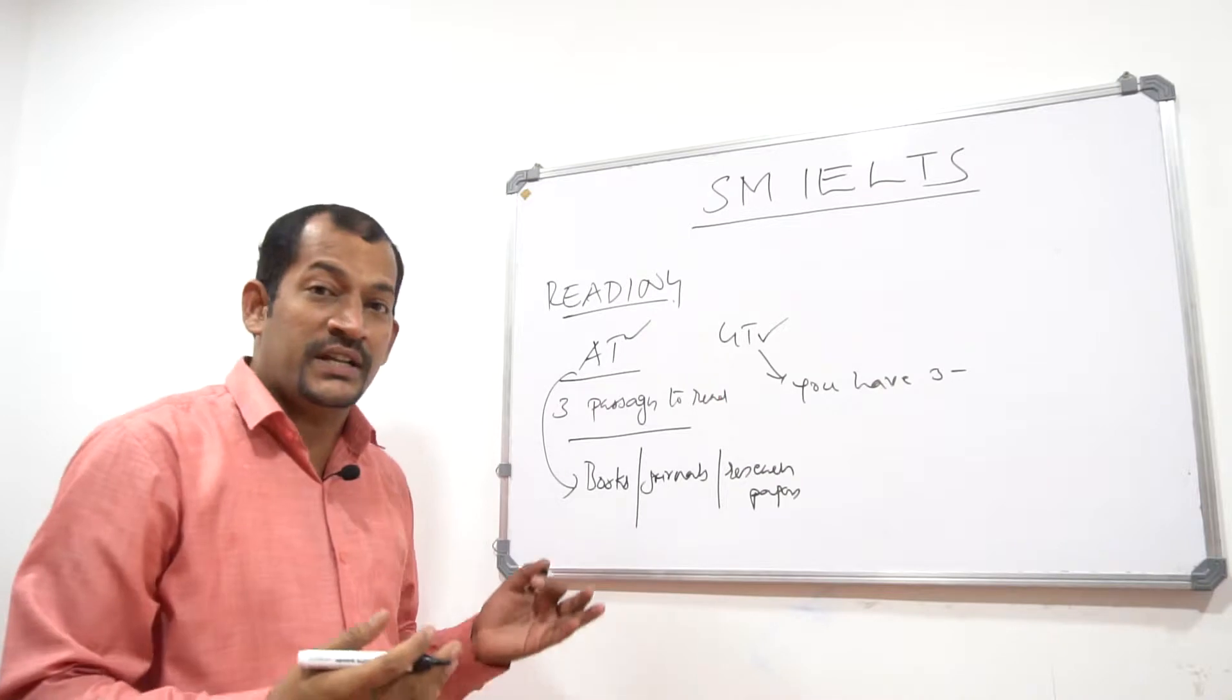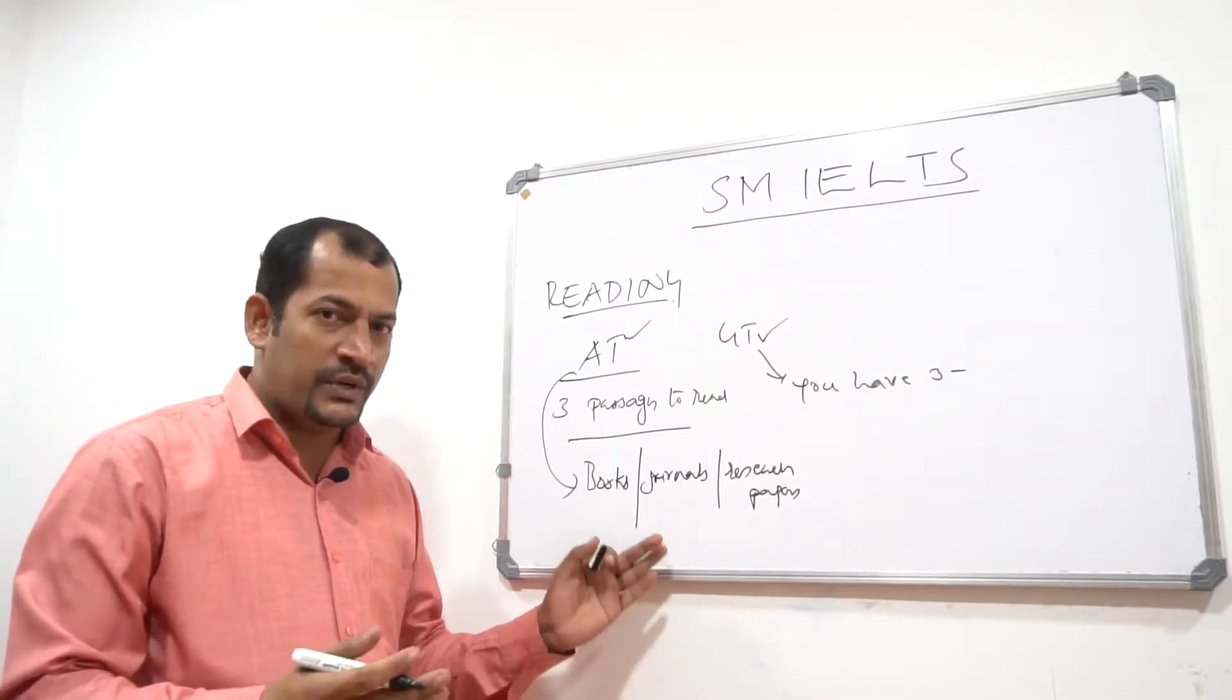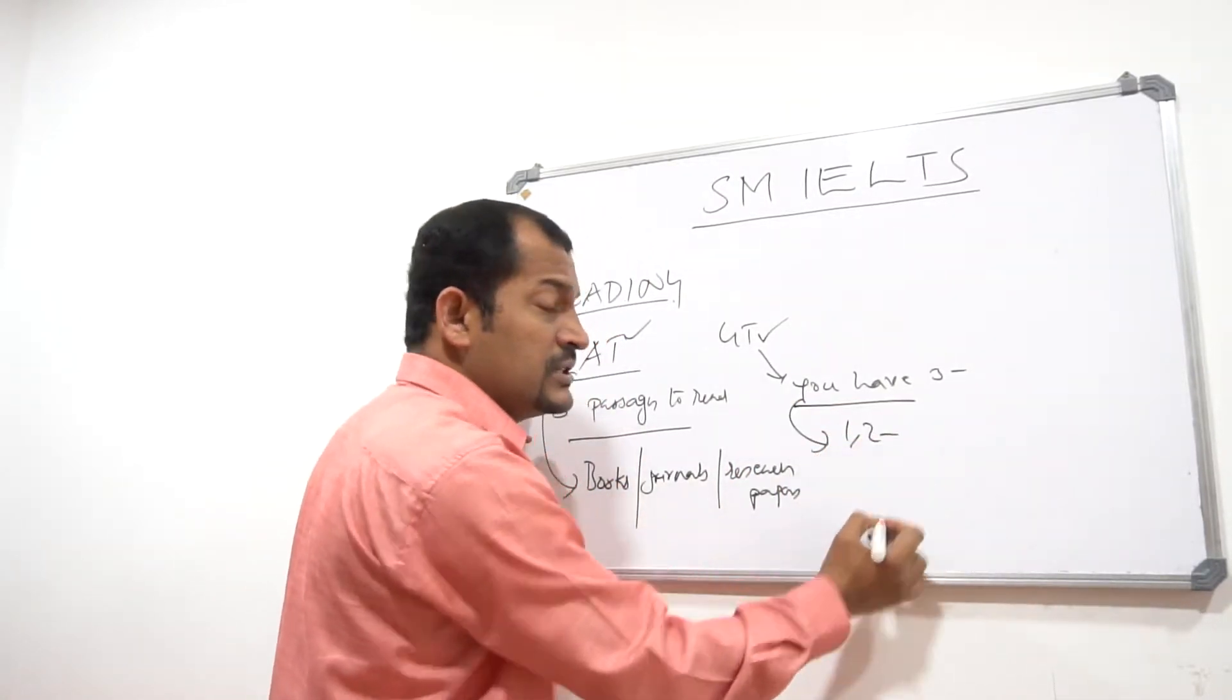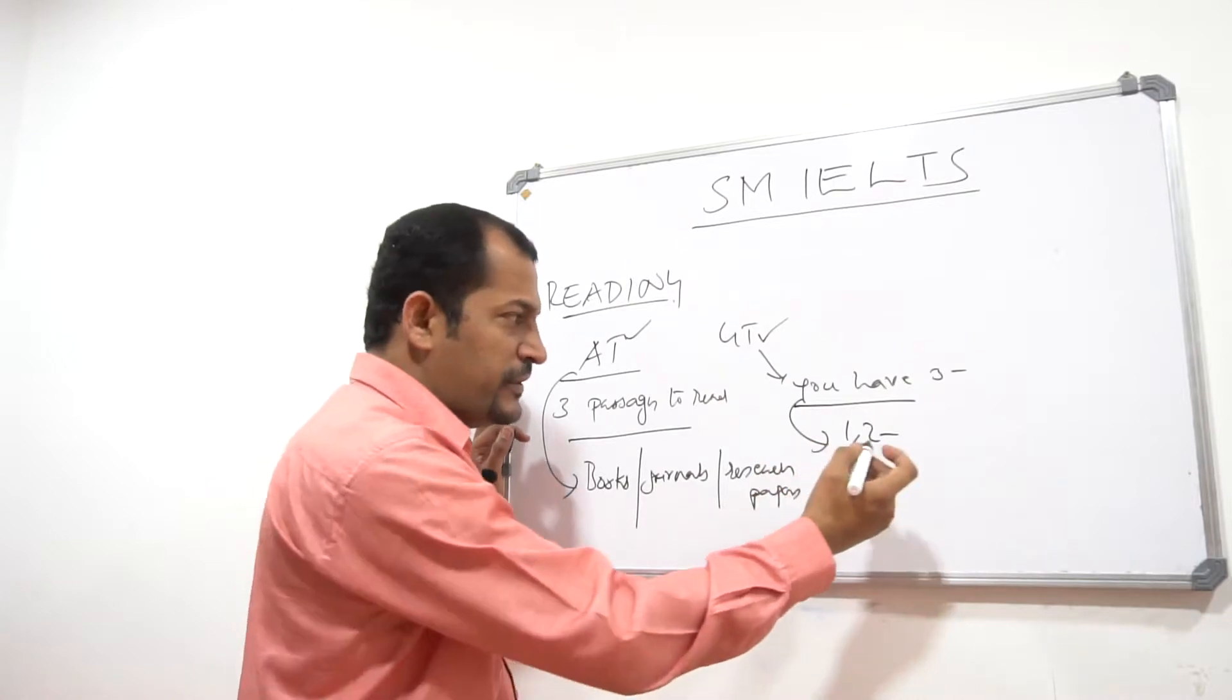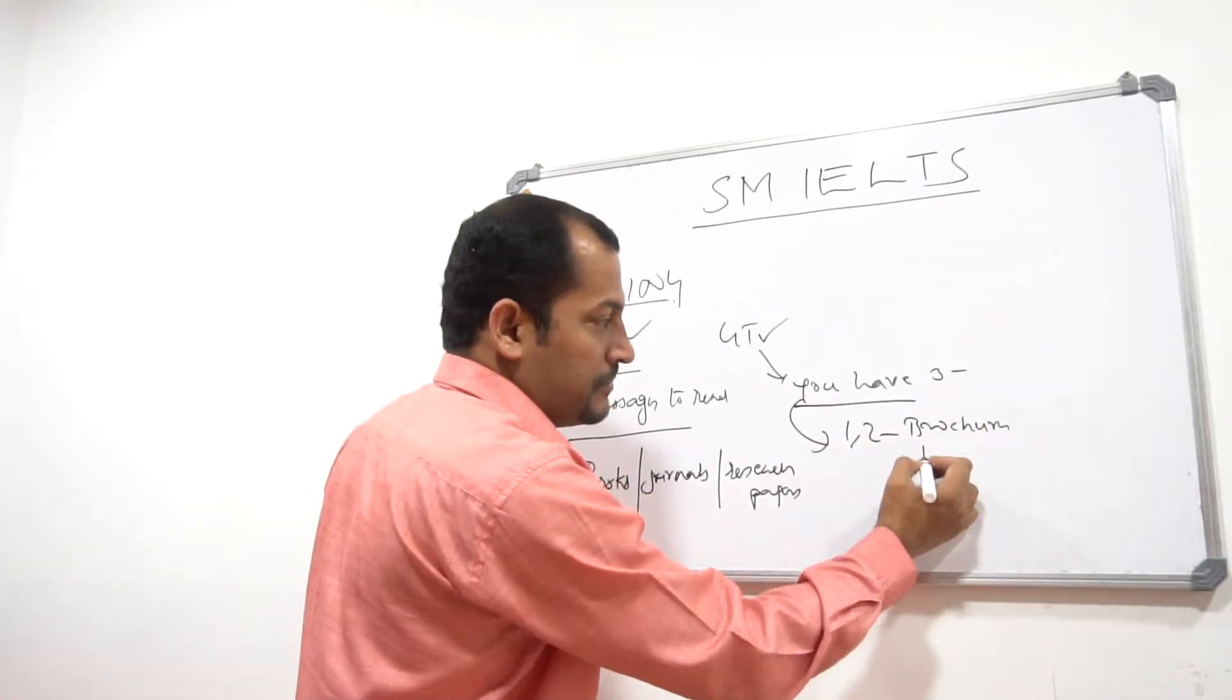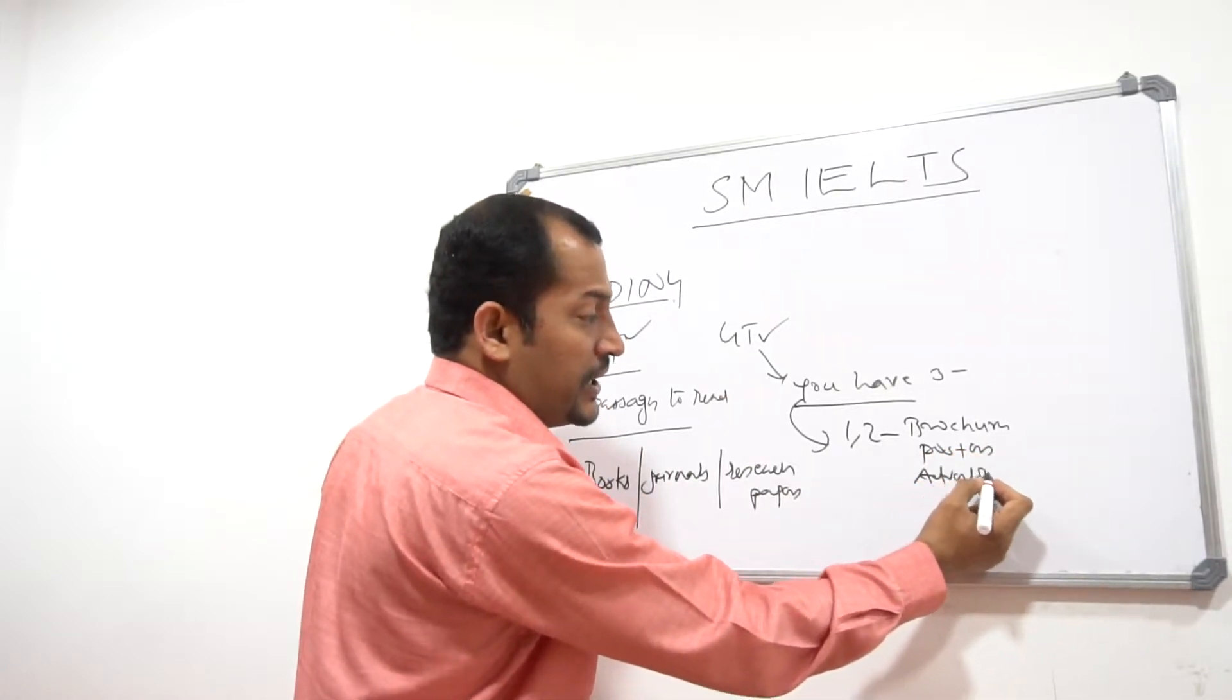So quite naturally you understand that it would be rather tough to some extent, not always. In the case of GT, the first two reading passages are taken from brochures, posters, and advertisements.